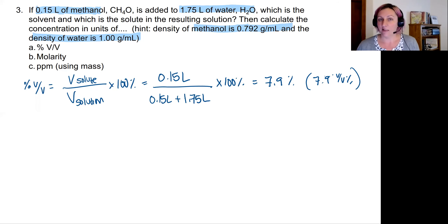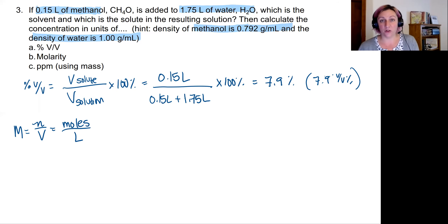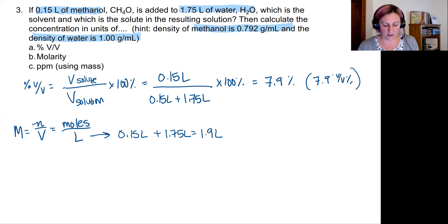Now let's look at molarity. Molarity equals moles over volume in liters. I like to write it as units because it guides my problem-solving strategy. I don't know the number of moles, but I do know the volume of my solution: 0.15 liters plus 1.75 liters, which equals 1.9 liters.